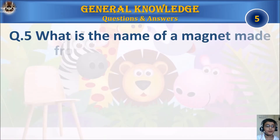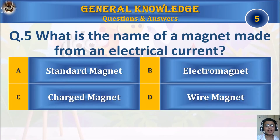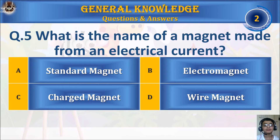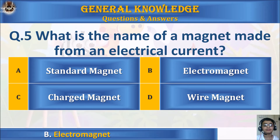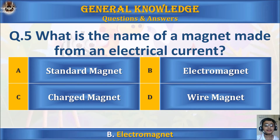Question 5: What is the name of a magnet made from an electrical current? A: standard magnet. B: electromagnet. C: charged magnet. Or D: wire magnet. Your time starts. The answer is B: electromagnet.